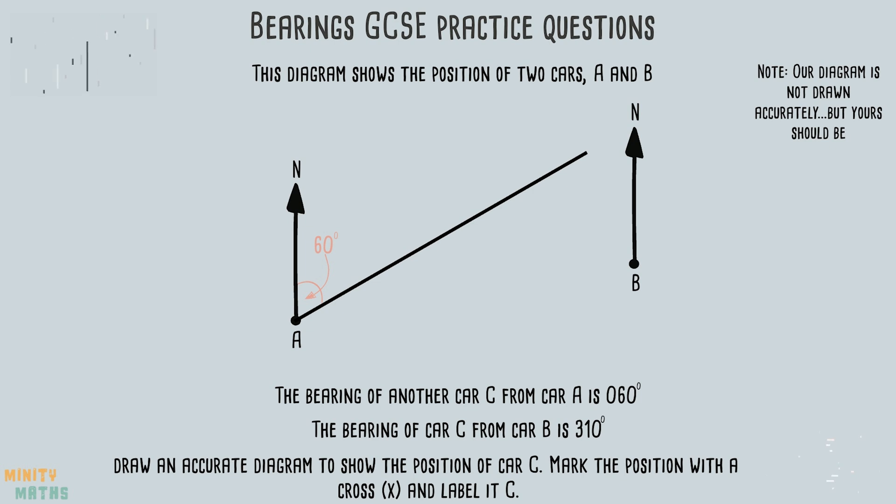Now we repeat this for the information given in the second sentence. Remember to measure the angle clockwise. So the point where these two lines meet is the exact position of car C.